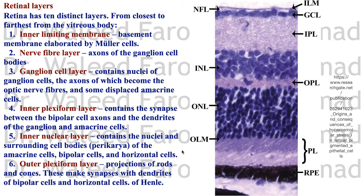Retina layers — the retina has 10 layers, starting from closest to the vitreous body to the furthest. Starting with the inner limiting membrane, which is the basement membrane of the Müller cells — support cells that support the different cells of the retina and traverse multiple layers of the retina.